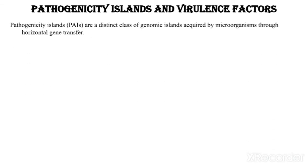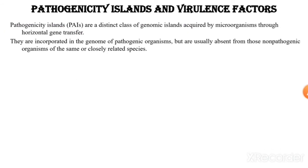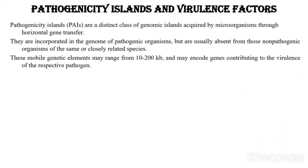The next point is pathogenicity islands (PAIs) and virulence factors. Pathogenicity islands are a distinct class of genomic islands acquired by microorganisms through horizontal gene transfer. They are incorporated in the genome of pathogenic organisms but are usually absent from non-pathogenic organisms of the same or closely related species. These mobile genetic elements may range from 10 to 200 kb.